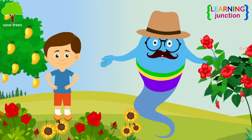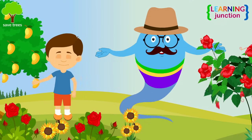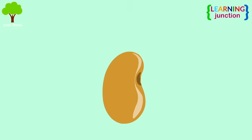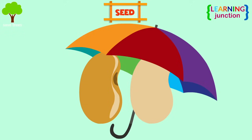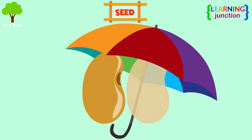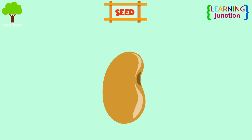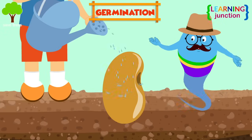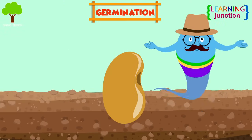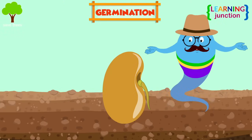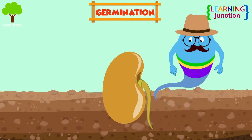Let's have a look at the stages of the life cycle of the flowering plants. Seed: they start their lives as seeds, which are covered with a hard outer shell that protects the embryo inside. Germination: the seed needs air, water, and soil to grow. At first, tiny roots emerge and then the stem grows.